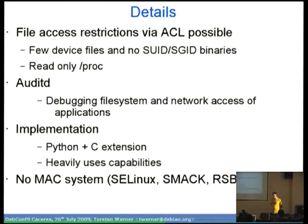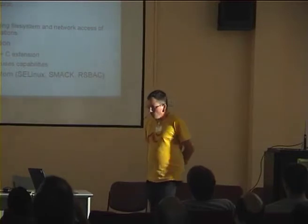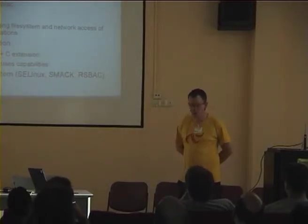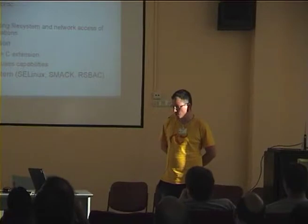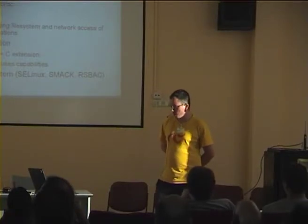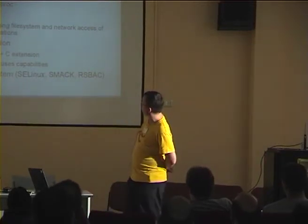You can create other access restrictions via POSIX access control lists. For instance, you can set up your shadow home directory so the trusted user can access it with read and write — useful if you want to upload files somewhere. We have only a few device files, so the path to the kernel is smaller. The setUID and setGID binaries don't work anymore. The proc filesystem is read-only.